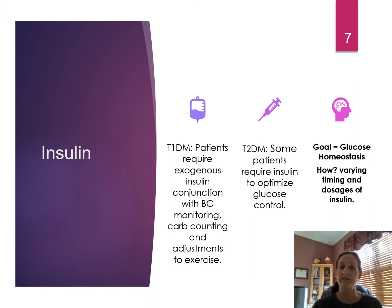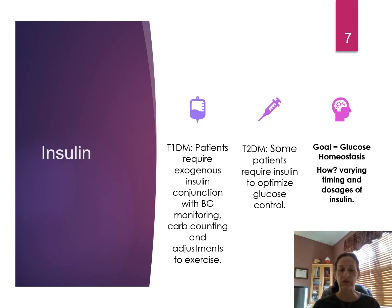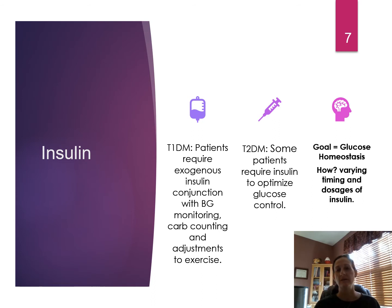All patients with type 1 diabetes will require exogenous insulin. There are two ways: subcutaneous injections via MDI or an insulin pump. If via syringe, a fast-acting insulin is given during the day to cover meals, snacks, and corrections for high blood glucose. Then a long-acting insulin like Lantus is given at night over a 24-hour period.